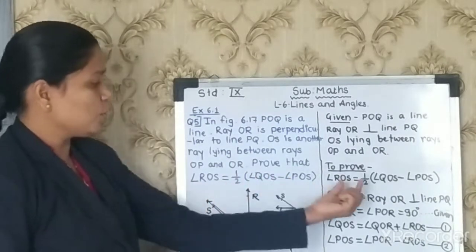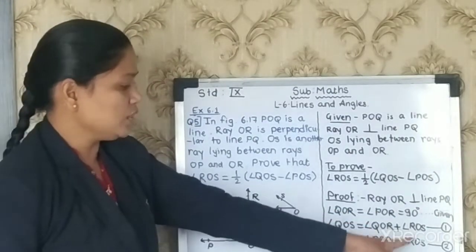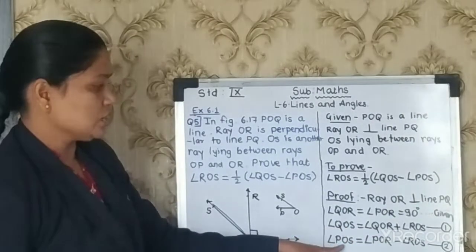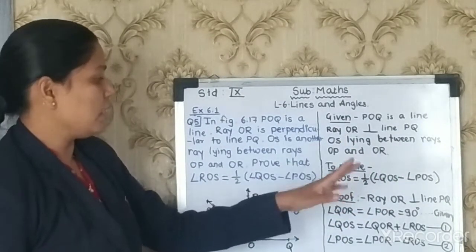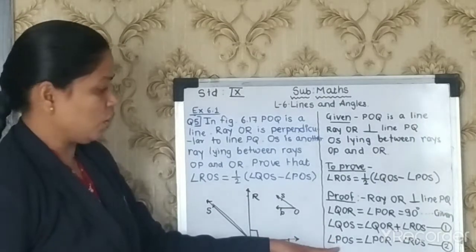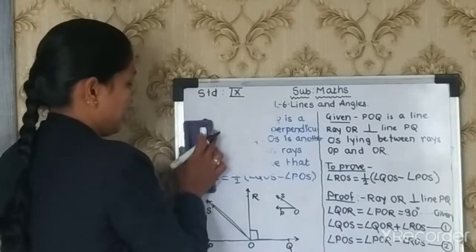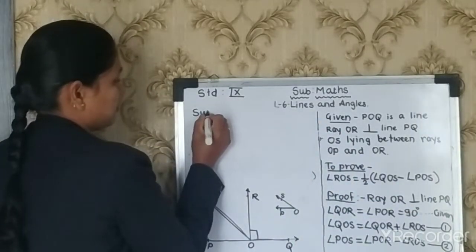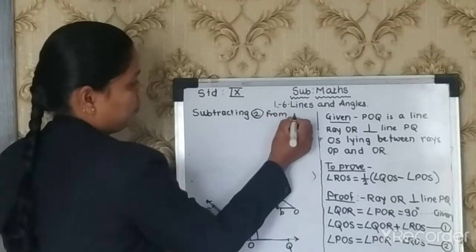We want ROS, and we also need QOS and POS. Subtracting statement 2 from statement 1: angle QOS - angle POS = (angle QOR + angle ROS) - (angle POR - angle ROS). Opening the bracket: = angle QOR + angle ROS - angle POR + angle ROS.